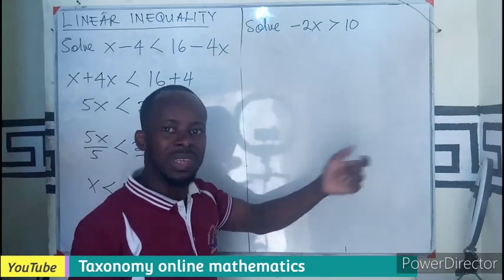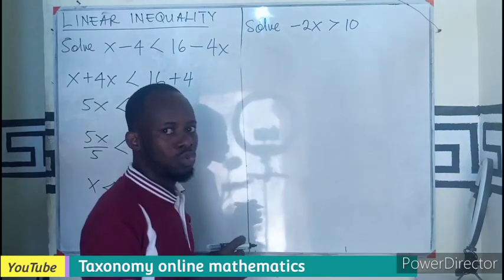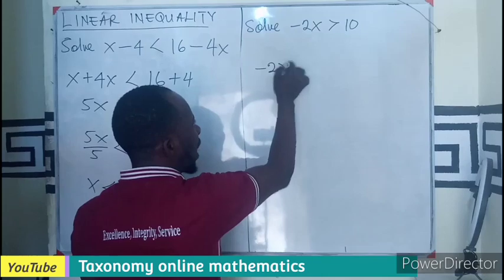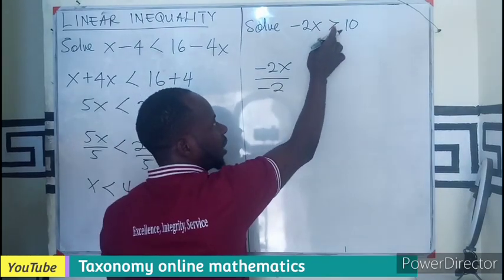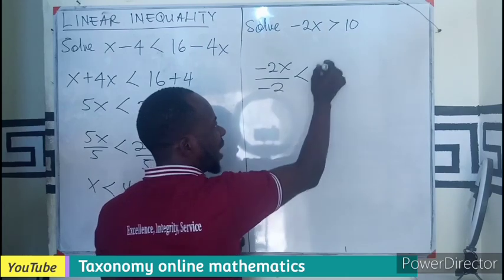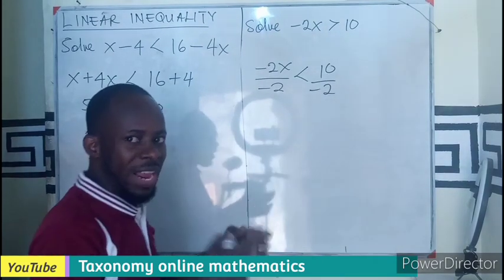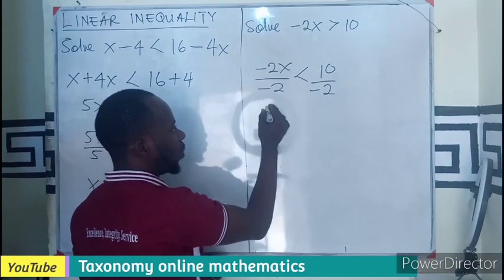So this simply means that the coefficient -2 will be used to divide. So that becomes -2x divided by -2. The sense of the inequality will change to less than, 10 divided by -2. I'm dividing by negative, so the sign of the inequality will change.